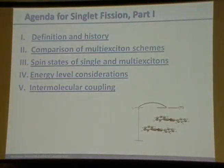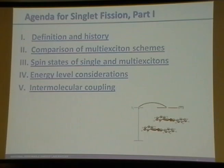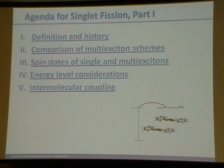The agenda is to define singlet fission and then discuss a little bit about the history, compare it to other multi-exciton schemes — especially multiple-exciton generation, which you've probably heard about quite a bit — and then dive into some of the fundamentals: spin states, single and multi-excitons, energy level considerations, and how you manipulate energy levels in molecules to induce the most efficient singlet fission. Finally, we'll discuss how you engender different types of intermolecular coupling to also get two triplets from one photon, which is essentially what singlet fission is.